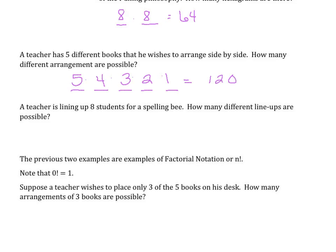A teacher is lining up eight students for a spelling bee. How many different lineups are possible? We could choose eight to be in the first slot. We used one of them, so we have seven — then six, five, four, three, two, and one. Multiplying these all together, there are 40,320 different ways that we could line up these students.